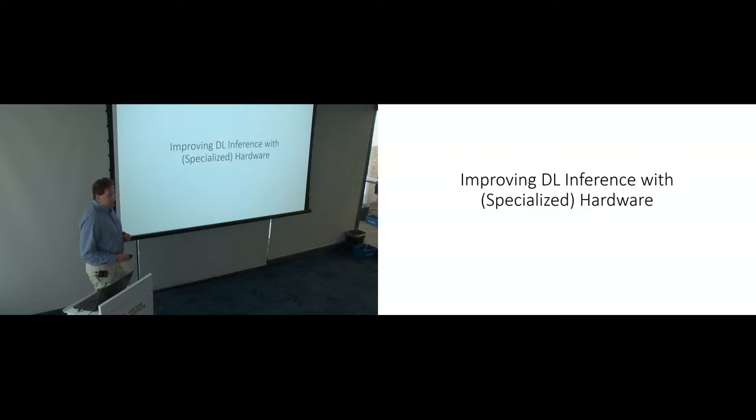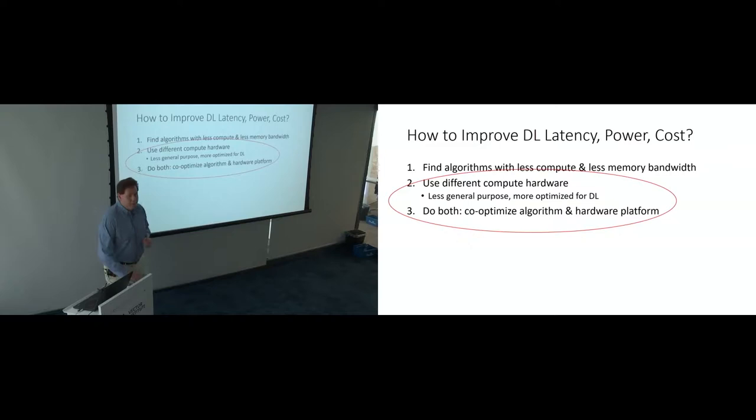So how can you do that? Well, you can do it with specialized hardware. The first thing you can do, which I imagine most of the people here are working on, so the world is counting on good results from this institute and others like it around the world, which is find algorithms with less compute and less memory bandwidth. So get the same accuracy, but do it with less computation. And there has been really good work in that area to try to make simpler networks that still get good answers. So that's clearly part of the solution.